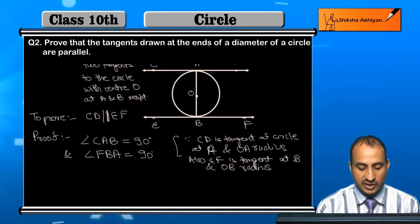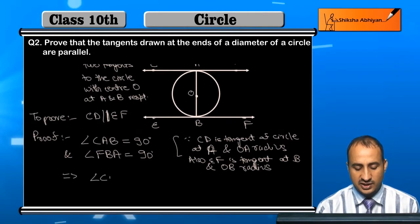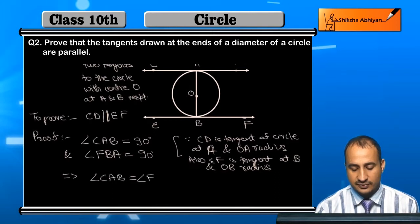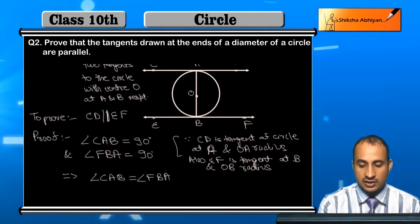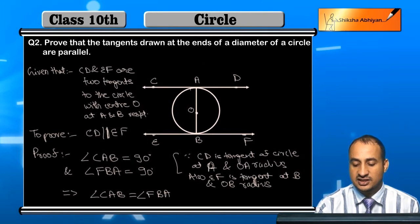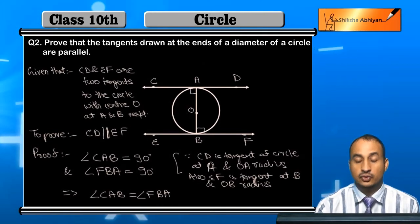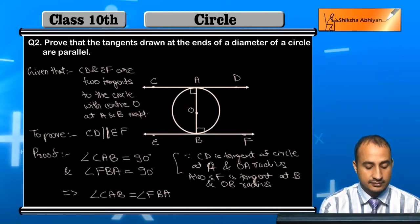Now, since both angles equal 90 degrees, this implies that angle CAB is equal to angle FBA. You can see that angle CAB equals FBA. These two angles are equal, and they are forming an alternate pair of angles.